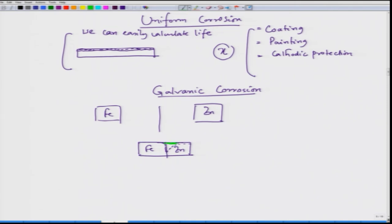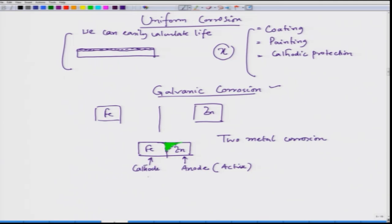The zinc section gets corroded. Whenever this happens, we call it galvanic corrosion. Since this is due to the connection or joining of two different metals, we also call it two-metal corrosion. In this case, zinc is corroding — it becomes the anode, also called active — while iron becomes the cathode, also called noble.